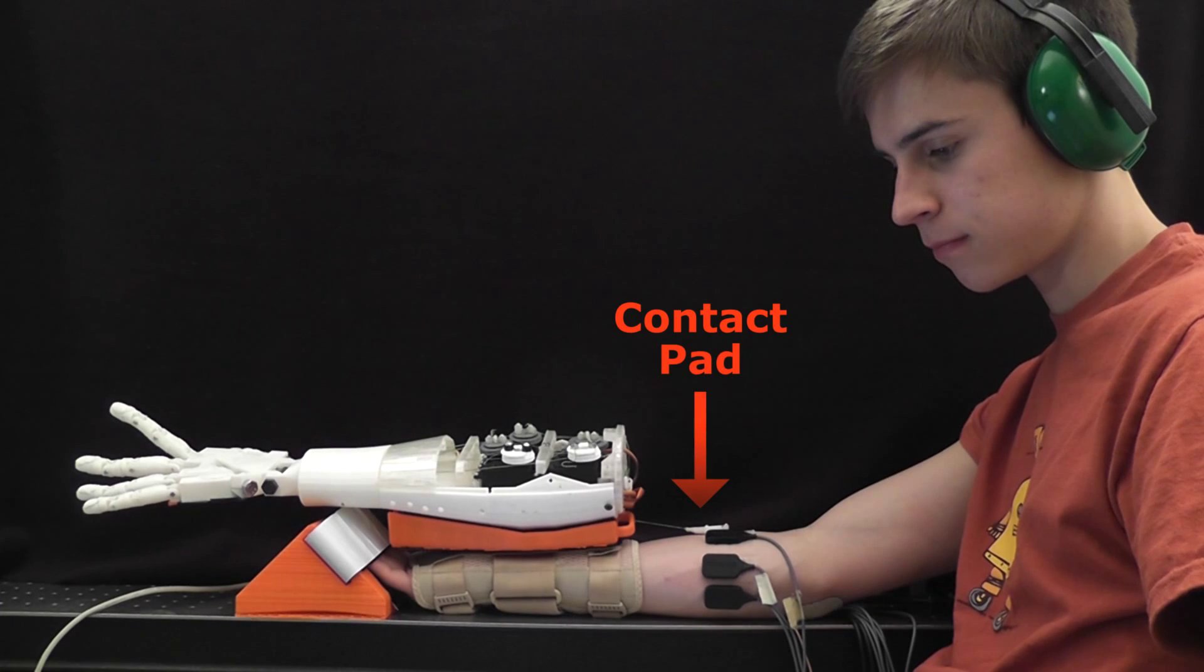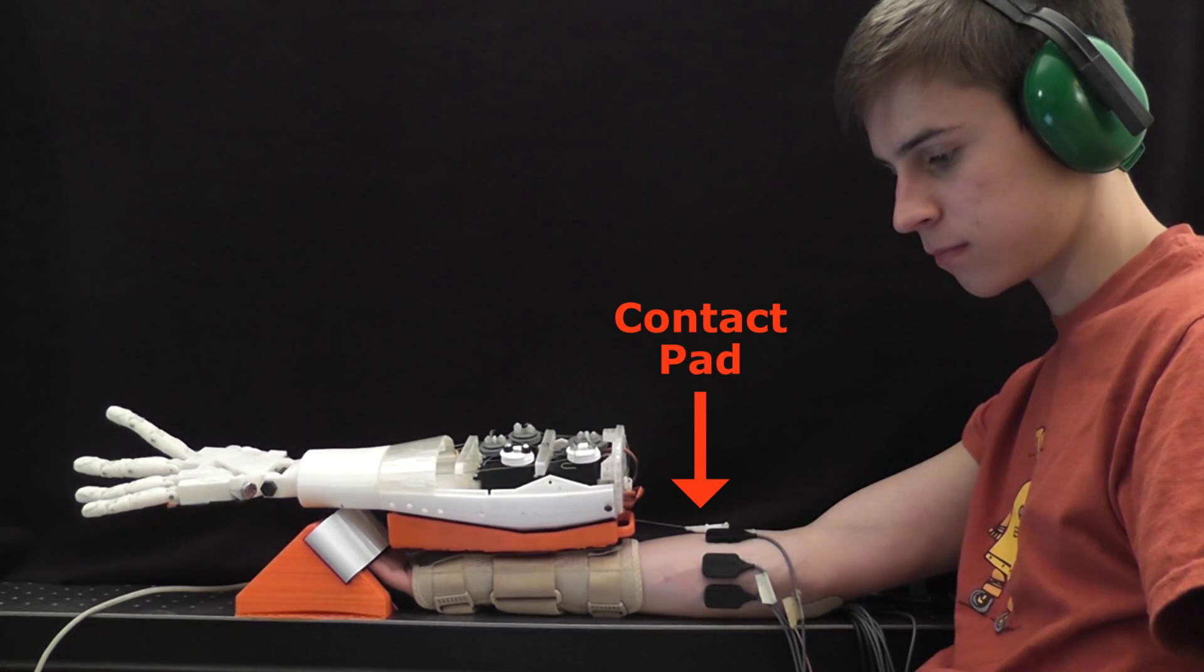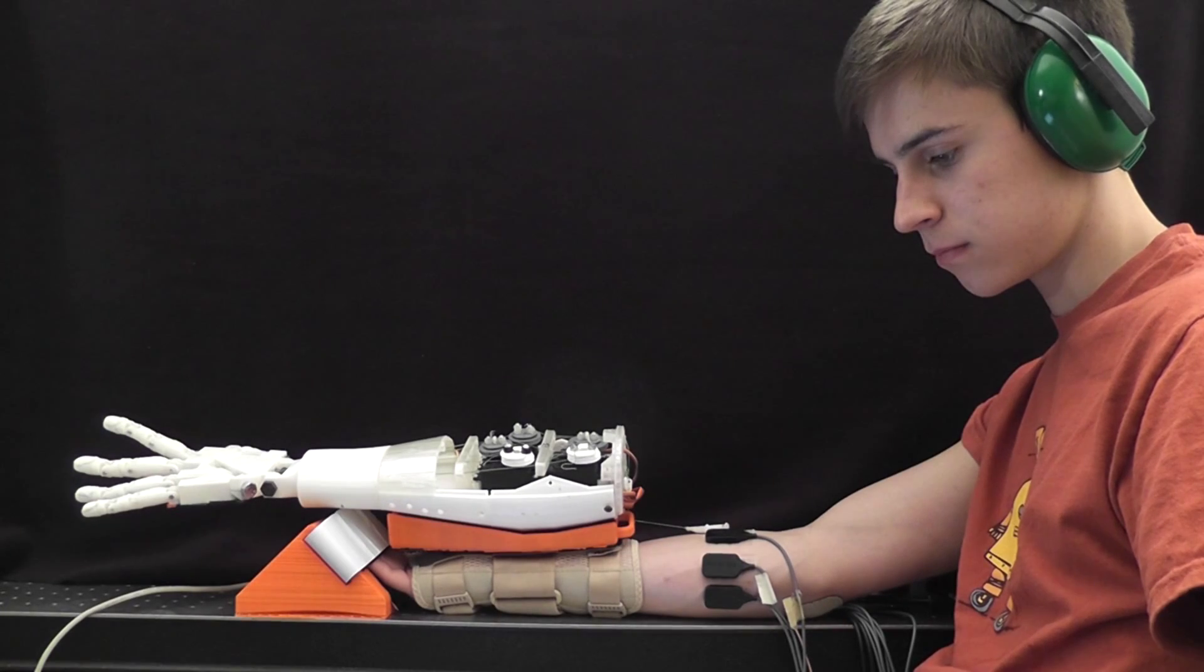When a finger moves, a contact pad is displaced by a proportional amount and the subject correlates the amount of perceived skin stretch to the angle of the finger.